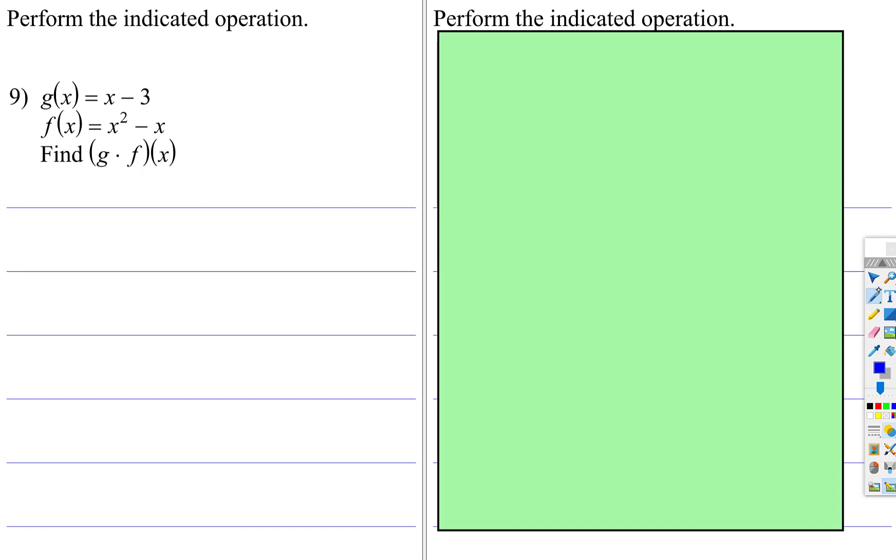And if you're multiplying two functions, well as you can see, these functions are both binomials, so you would just set x subtract 3 times x squared subtract x.